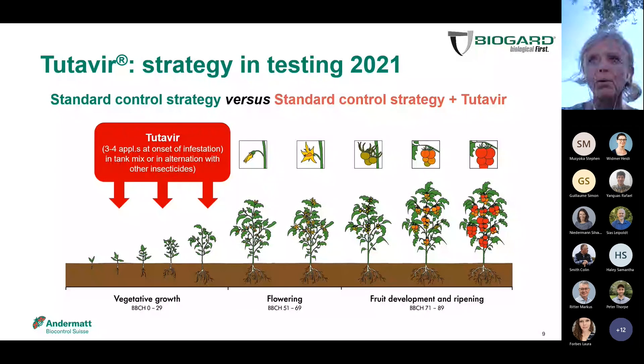This is an example of the standard control strategy. You can see the green dots — many different products were included in the strategy. From the 10th of September onwards, we included Tutavir at 100 ml per hectare in the strategy.